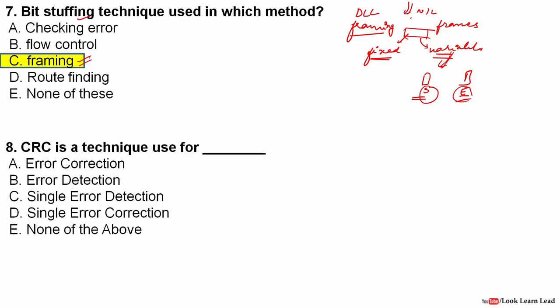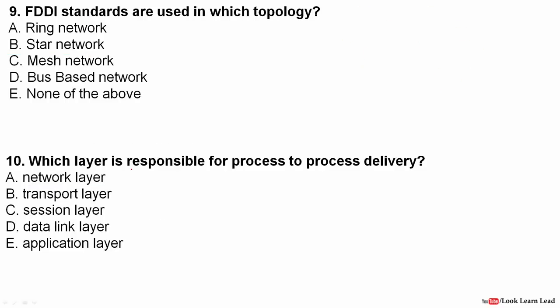What is CRC? CRC stands for Cyclic Redundancy Check. It is an error detection technique — it can only detect errors, not correct them.